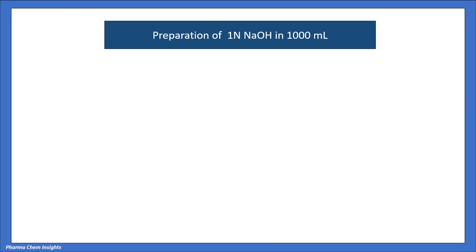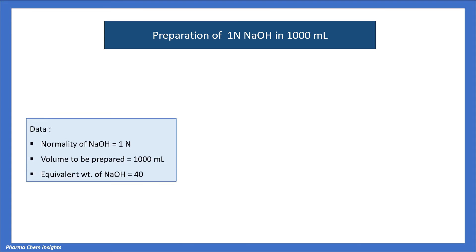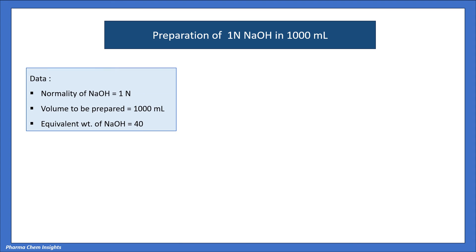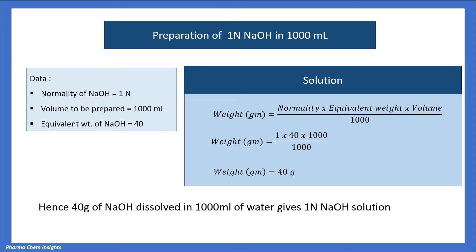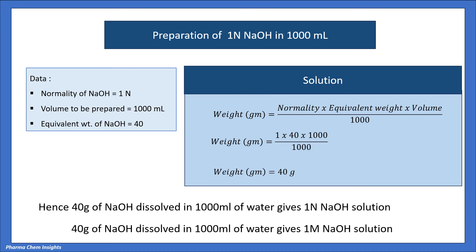Example 3: Preparation of 1 normal NaOH in 1000 ml. Data: normality = 1 N, volume = 1000 ml, equivalent weight = 40. Weight = 1 × 40 × 1000 / 1000 = 40 grams. Hence, 40 grams of NaOH dissolved in 1000 ml of water gives 1 N NaOH solution, and since molarity equals normality, also a 1 molar NaOH solution.